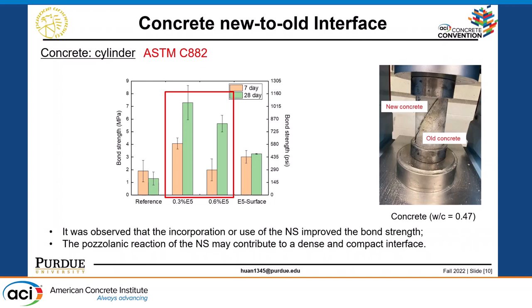Before going into the data, I want to point out that for the surface method of nanosilicate, we spread the liquid nanosilicate on top of the old concrete layers, and the usage was actually lower than 0.3% nanosilicate. Of course, this dosage depends on the geometry of our samples, but in my case the surface method used a very little amount. Looking at the result, incorporation of nanosilicate improved the bonding strength between the two concrete layers — the new and old layers — and this improvement can be observed in both the surface method and the direct adding method. We believe that nanosilicate, nano-filler, and nano-filler effects all contribute to the development of higher strength.